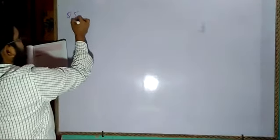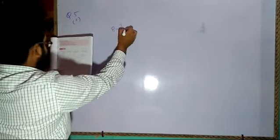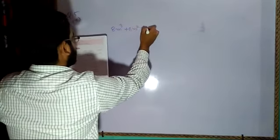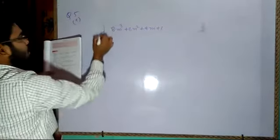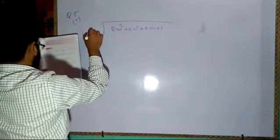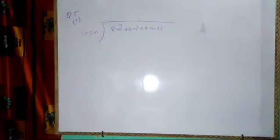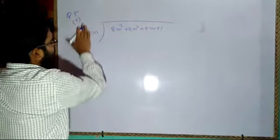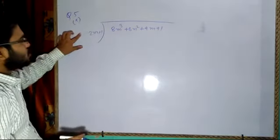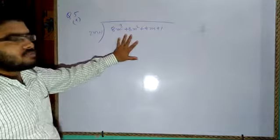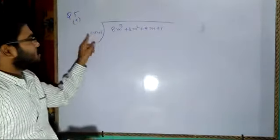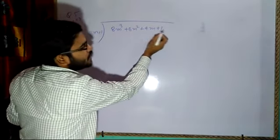Now question number 5a: divide 8m³ plus 8m² plus 4m plus 1 by 1 plus 2m. If you keep 1 plus 2m as the divisor, it will be difficult. So rearrange the divisor: instead of 1 plus 2m, write 2m plus 1 — in decreasing order of powers. The dividend is already arranged in decreasing order: m³, m², m, then constant.